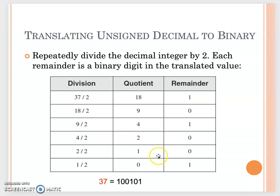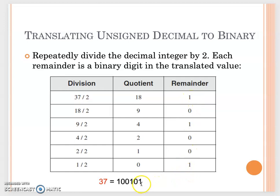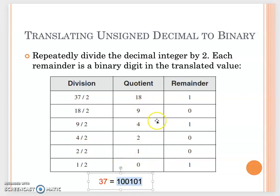Continue using the quotient to divide by 2 again. For example, 18 divided by 2 gives quotient 9 with remainder 0. All the remainders are filled in one by one from right to left. So the remainders 1, 0, 1, 0, 0, 1 are written from the most left, giving you 100101.